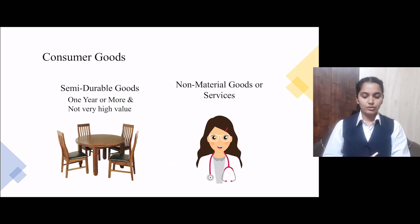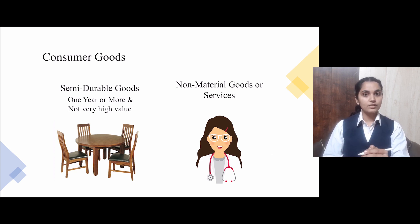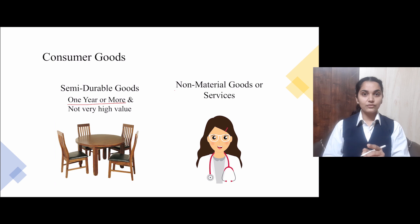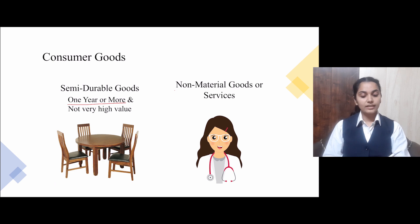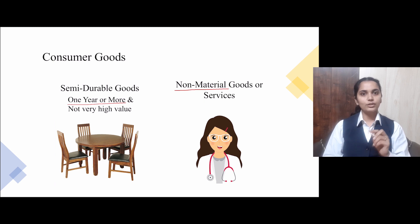The next two categories are semi-durable and non-material. Semi-durable goods lie in between durable and non-durable. You can use them for one year or more — not for a very long time, but not single-use either. The example given is any kind of light furniture. These are not very high in value; high value is a feature of durable goods. Next we have services, and you should note that their other name is non-material goods — goods which are not in material form, meaning ultimately services. For example, if you consult a doctor, they provide you services, and that can be non-material goods for us.